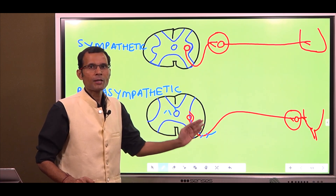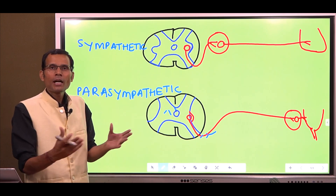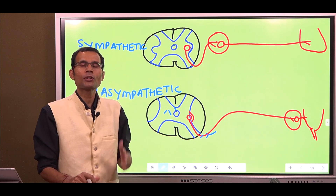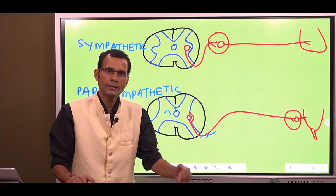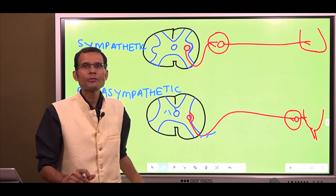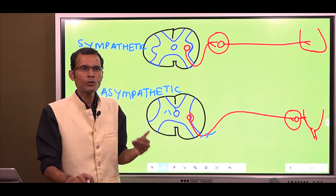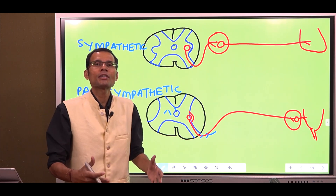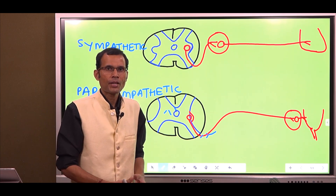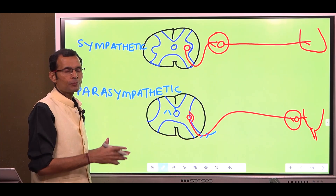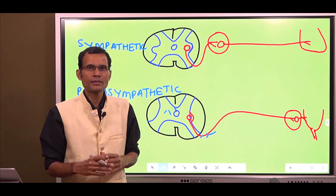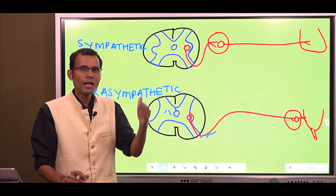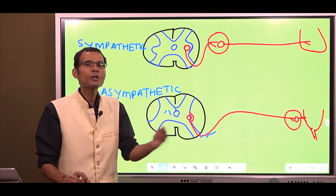We will understand the ANS pharmacology in brief. The case was of excessive sweating, also called hyperhidrosis — excessive sweating of the palms and feet. These patients would have taken lots of treatments, and when they came to me, I would give them anticholinergics and they would often work, and the sweating would stop. The patient would get relief. What was the basis of this? Let's start to understand the basis behind the treatment of hyperhidrosis by anticholinergic drugs.